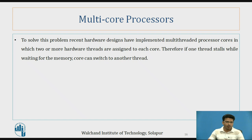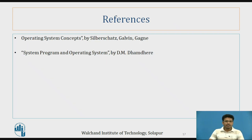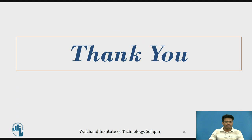To solve the memory stall problem, recent hardware designs have implemented multi-threaded processor cores, in which two or more hardware threads are assigned to each core. If one thread stalls while waiting for memory, the core can switch to another thread, avoiding the stall. References: Operating System Concepts by Galvin, and System Programming and Operating System by Domdery. Thank you.